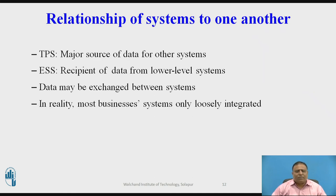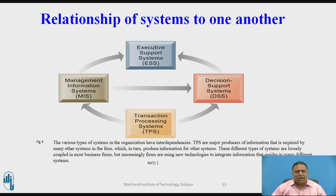Regarding the relationship of systems to one another: the transaction processing system is a major source of data for other systems, while the executive support system is a recipient of data from lower-level systems. Data may be exchanged between systems. In reality, a business's systems are only loosely integrated. The various types of information systems in an organization have interdependencies, and increasingly firms are using new technology to integrate information that resides in many different systems.